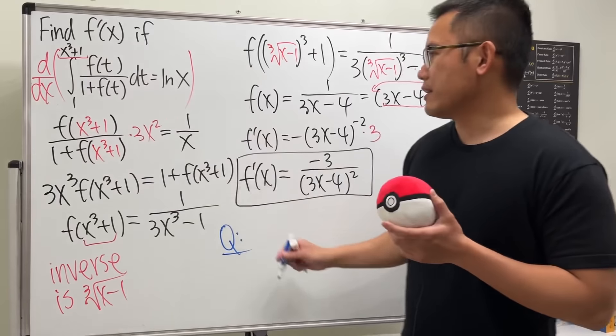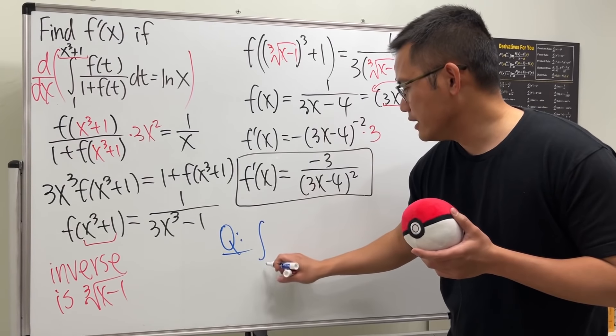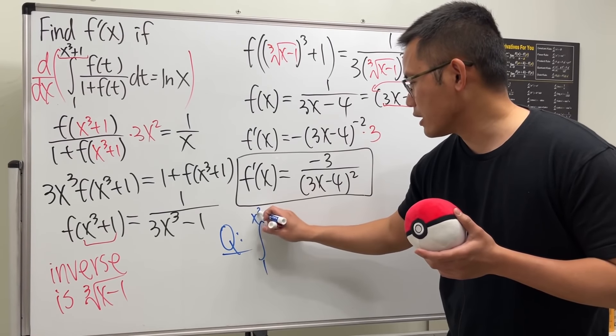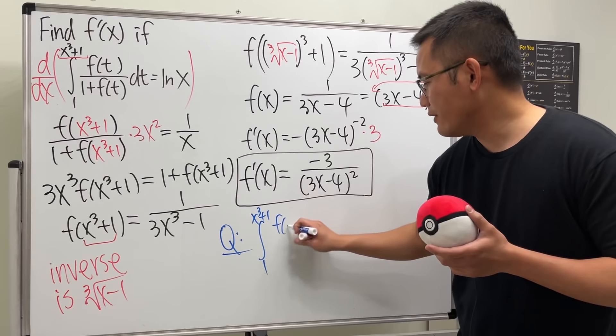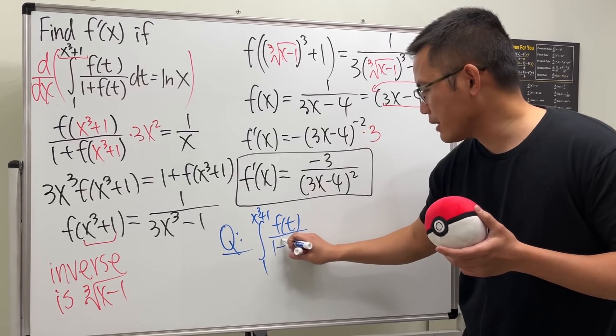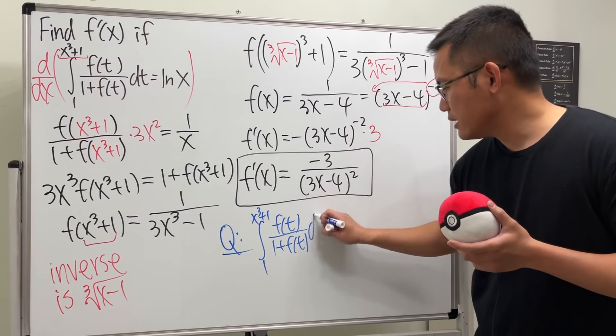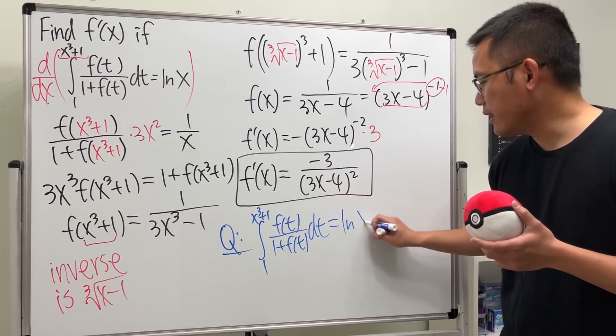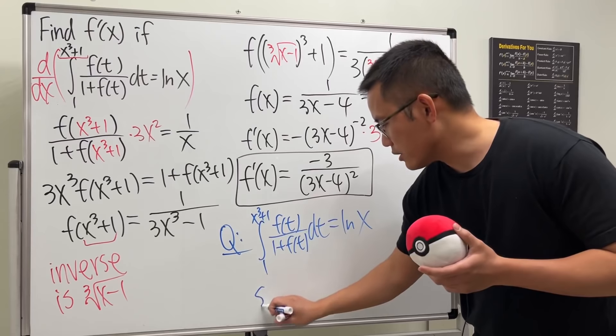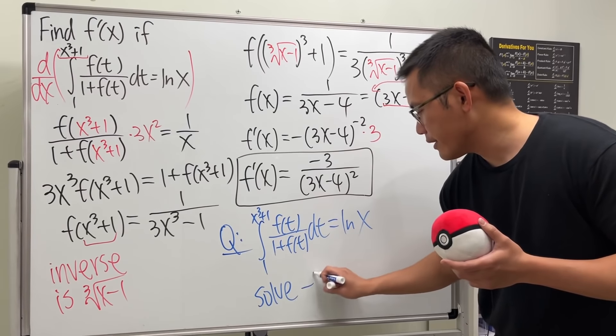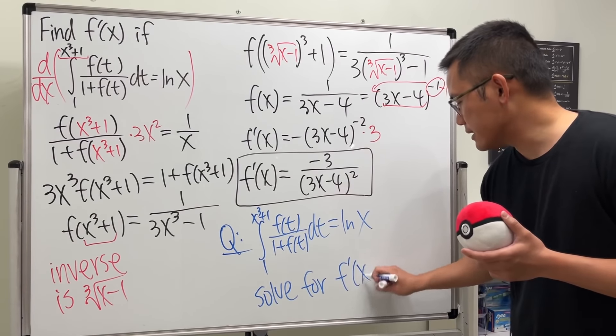So here is the deal. I'm going to just write that down again. So suppose we have the integral from 1 to x^3 + 1. And we have f(t) over 1 + f(t) dt and this is ln(x). And we still want to solve. We'll find f'(x).